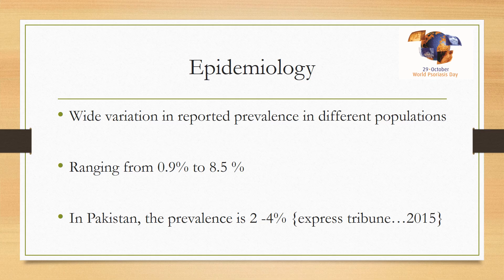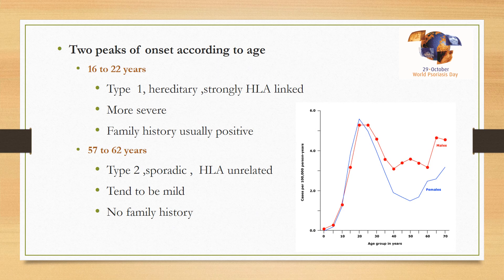Coming to the epidemiology, there is wide variation in reported prevalence in different populations. It may range from 0.9% to 8.5%. 0.9% is the prevalence reported in the US, and 8.5%, which is quite high, has been reported in Norway. This wide variation can be due to differences in ethnicity, genetic susceptibility, environment, or climate — and also methodology of the studies. In Pakistan, a figure published in the Express Tribune in 2015 was two to four percent, but personally, as a dermatologist, I feel this is basically the tip of the iceberg, with the main body still lurking in the general population, untreated or presenting to general practitioners.